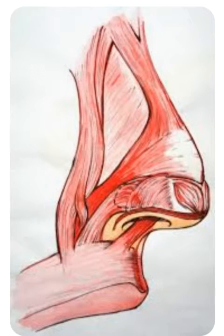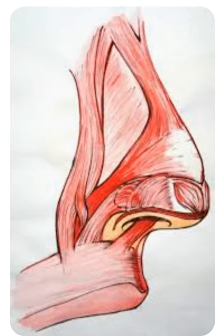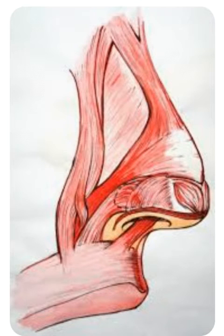Compressor Naris Muscle is originated from the alveolar process of the canine tooth, and the main function of this muscle is to compress the nostrils.